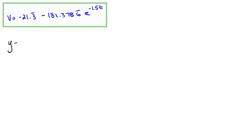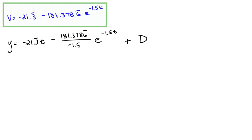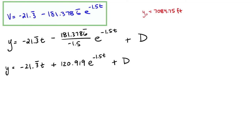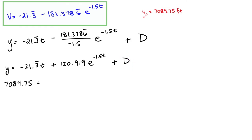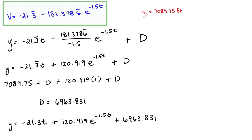Integrating, the height of the parachuter is negative 21.3 repeating times t, minus 181.3786 repeating divided by negative 1.5 times e to the negative 1.5t, plus a constant of integration D. Recalling that the initial height when we open the parachute is 7,084.75 feet, we plug in t equals 0 and solve for D. The first term goes to 0, and e to the 0 is 1, allowing us to solve for D.